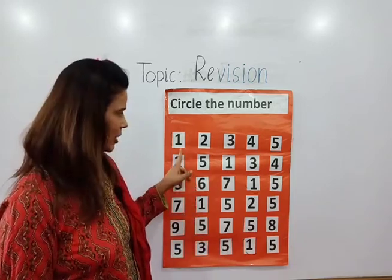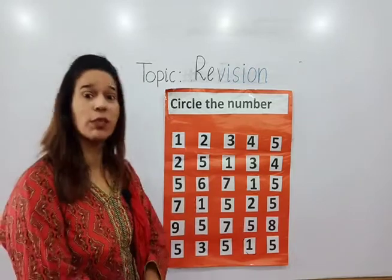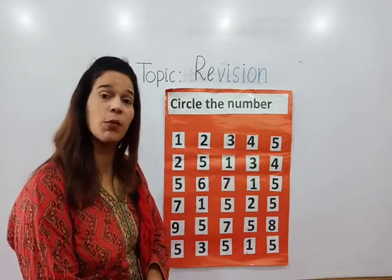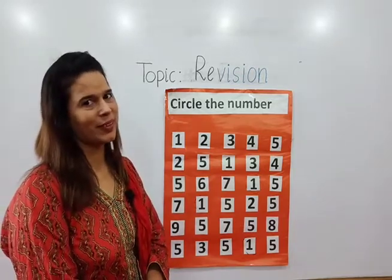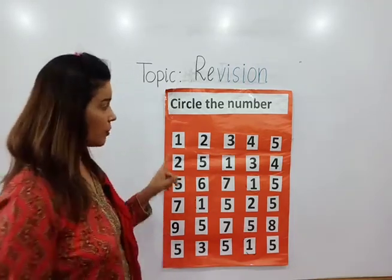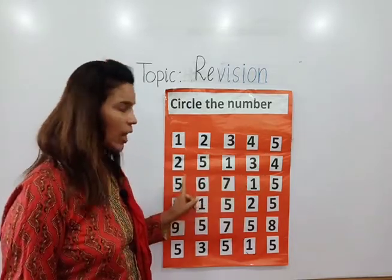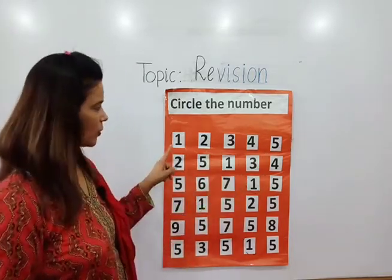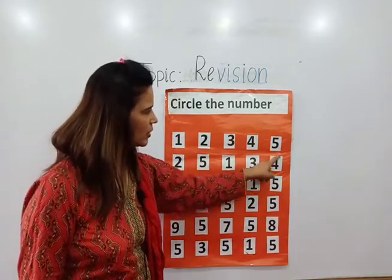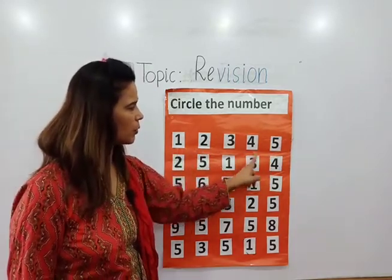You can see there are different numbers, and what we will do is circle number one. We will find out number one from these numbers and circle it. Look at the first line — here you can see different numbers written, and we will circle number one.